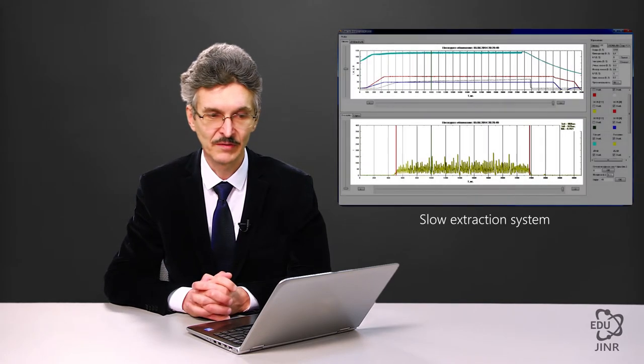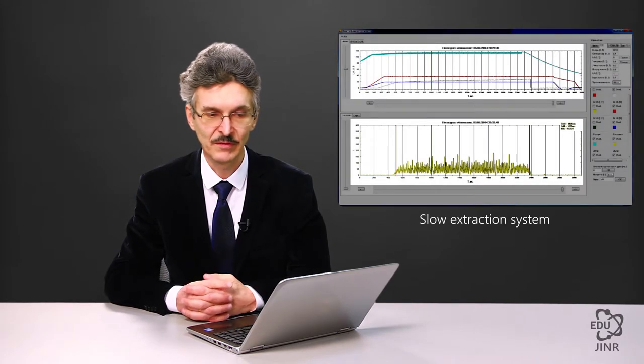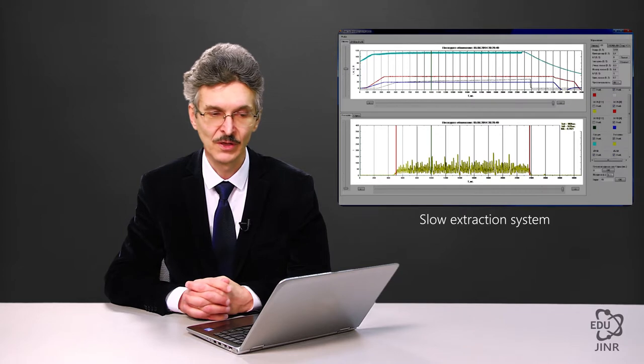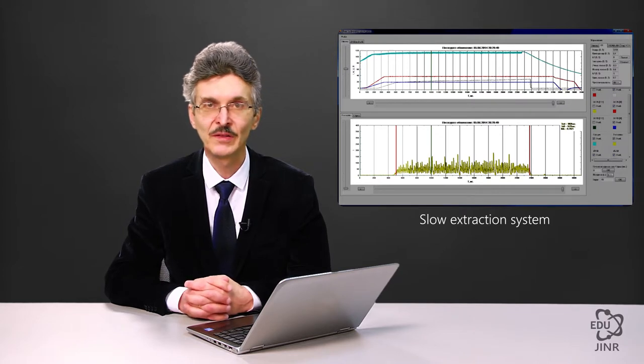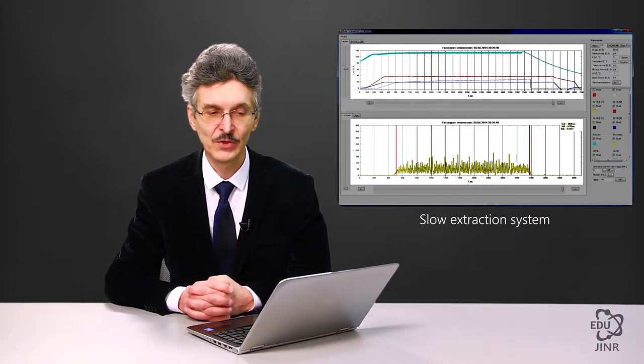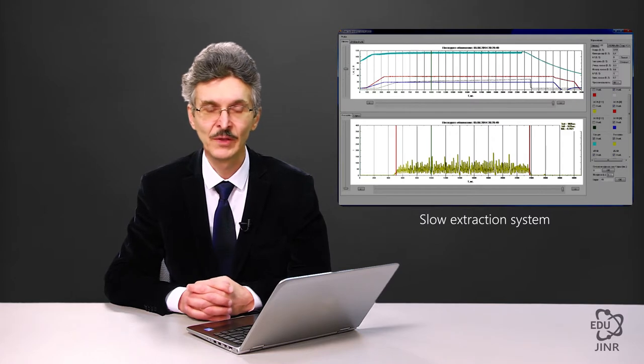The window which controls the slow extraction system is displayed on the screen. In this window, one can see the currents of the quadrupole lens family that direct the betatron oscillation frequencies towards the resonance, the sextupole lens currents which excite the resonance and provide the required phase, the voltage in the electrostatic septum, and the signal of the extracted beam.